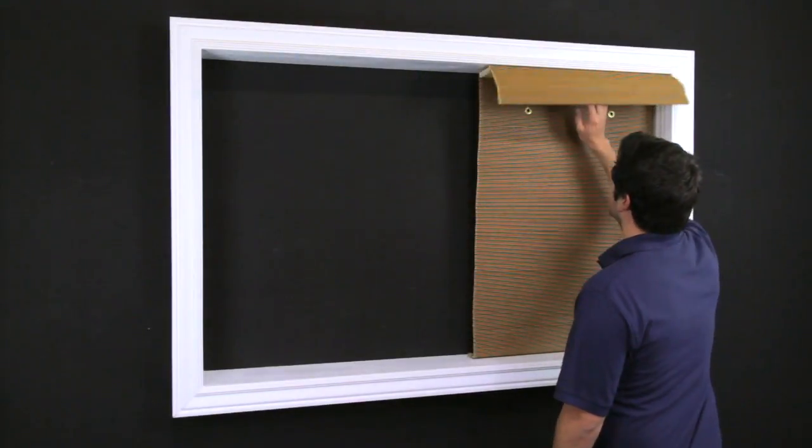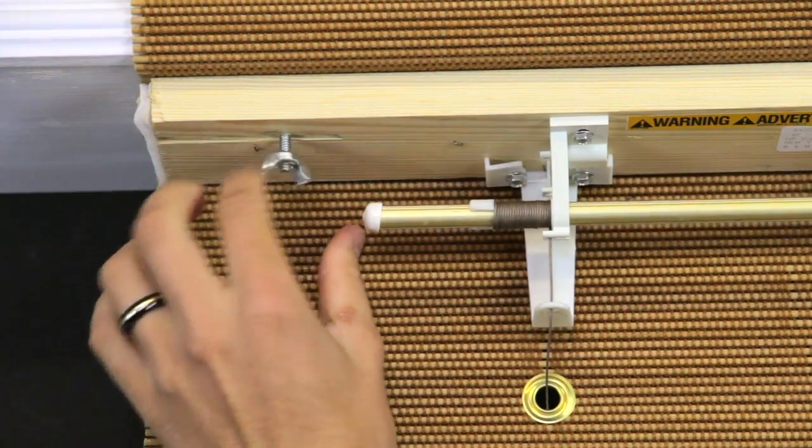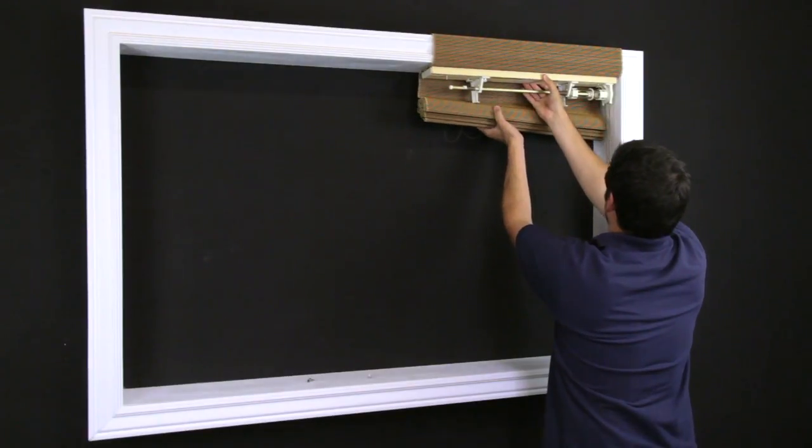To remove the shade, lift the valance up while unscrewing the wing nuts on the underside of the headrail. Remove the shade and lay it on a flat surface.